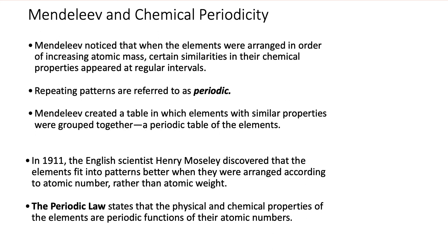Mendeleev and chemical periodicity. Mendeleev noticed that when the elements were arranged in order of increasing atomic mass, certain similarities in their chemical properties appeared at regular intervals. Repeating patterns are referred to as periodic. Mendeleev created a table in which elements with similar properties were grouped together, a periodic table of elements.